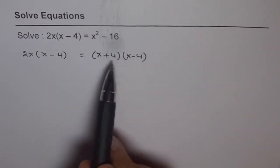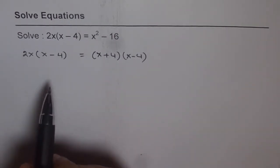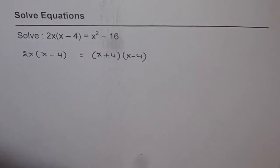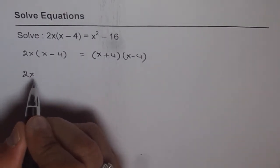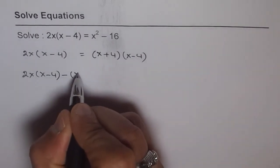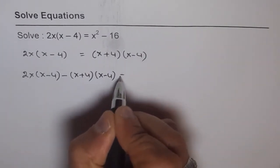So you can check, you can expand and check, you get the same thing. Now the next step is we should bring these terms together to the left side. Then we get 2x times x minus 4 minus x plus 4 times x minus 4 equals 0.